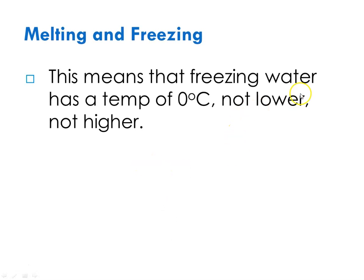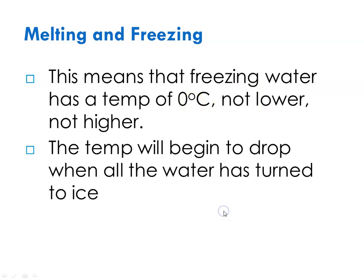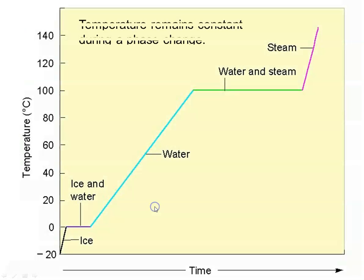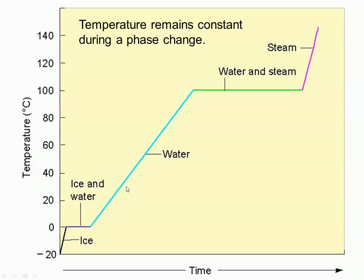This means that melting ice has a temperature of zero — not lower, not higher — and the temperature will begin to rise when all of the ice has melted. And this also means that freezing water, if it's releasing energy, has a temperature of zero, not lower, not higher, and the temperature will begin to drop after all of the water has turned to ice. So temperature will remain constant during the phase change, whether going from ice to water or water to ice.